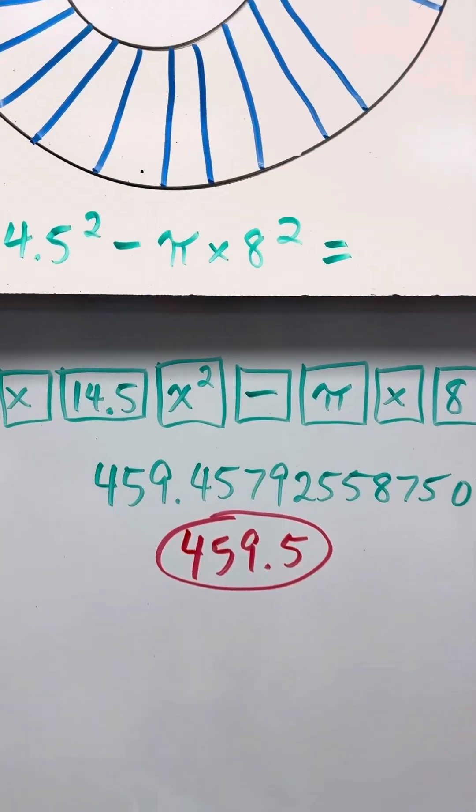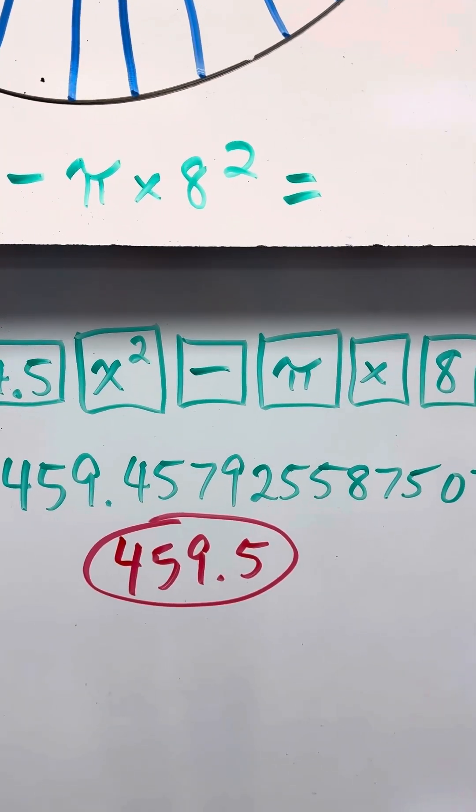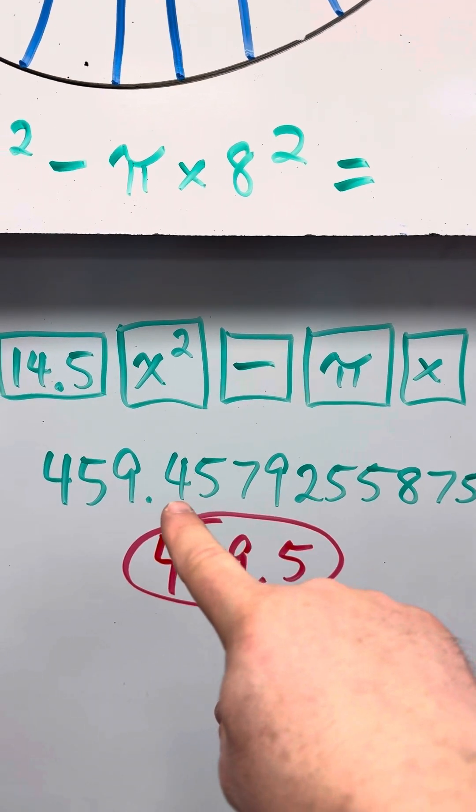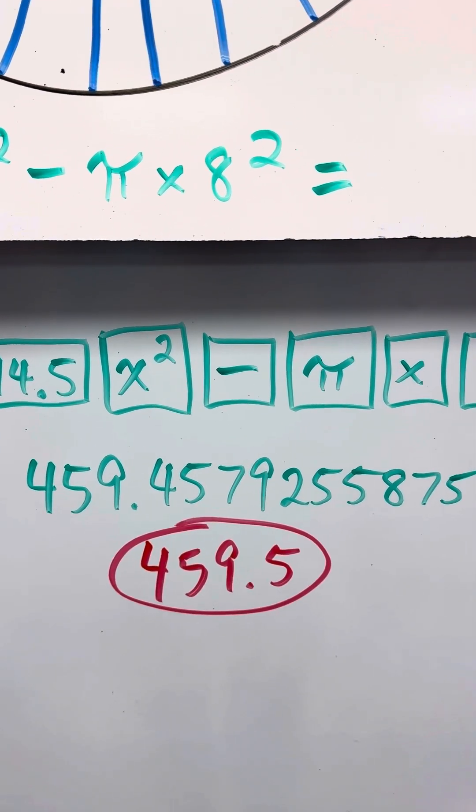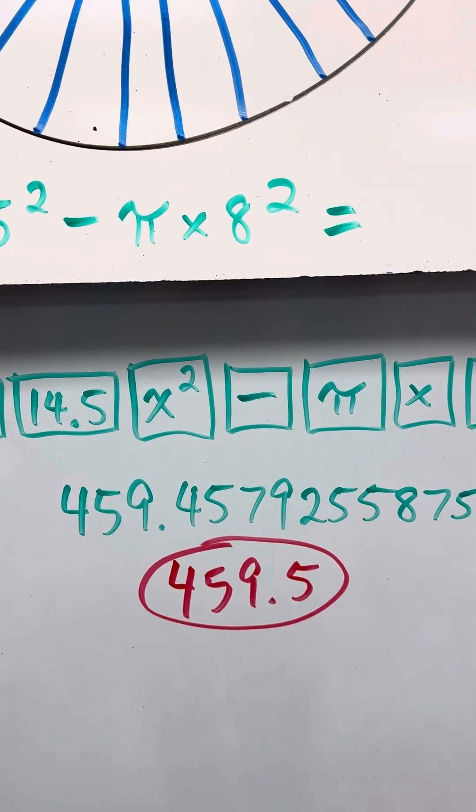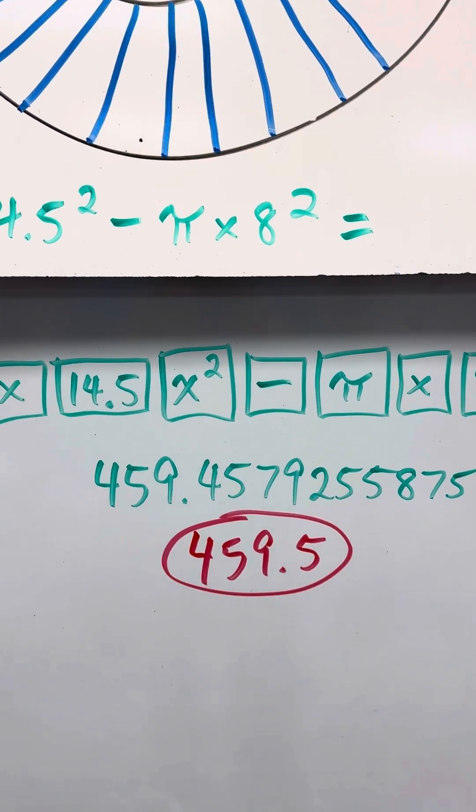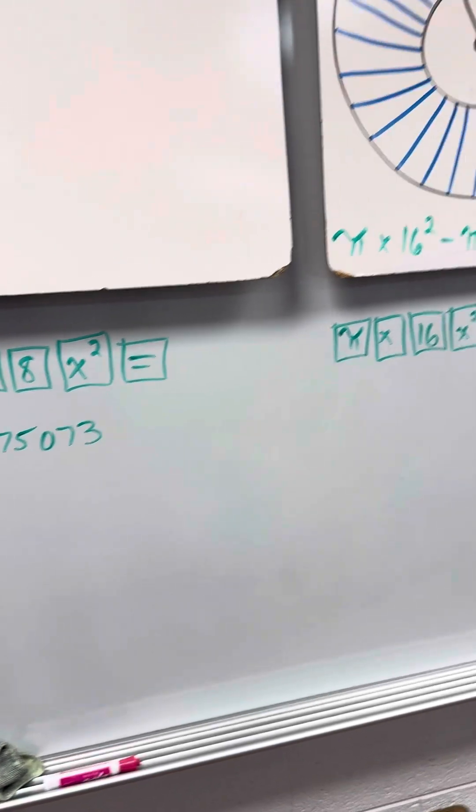You're going to get 459.4579. Here, this 4 is going to round up to 5, right? And your delta math problems, not all of them will round up. It just happens to be that these four examples do.